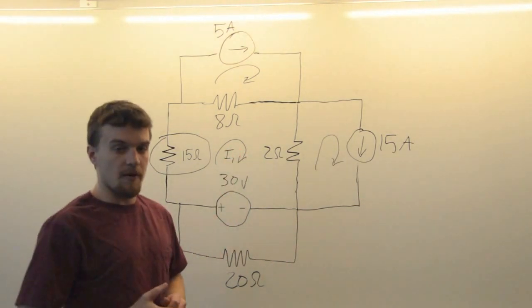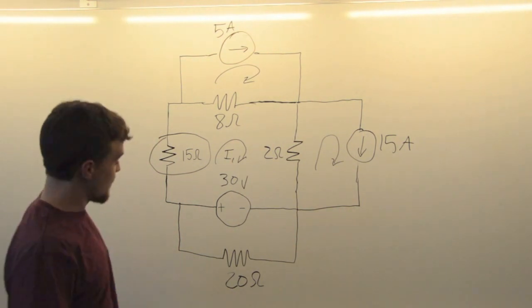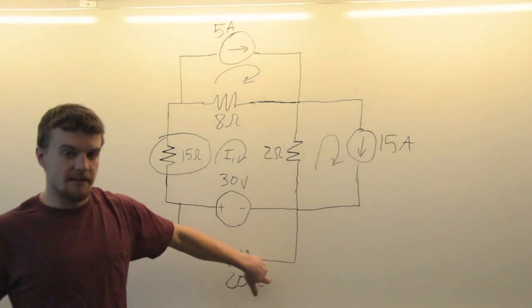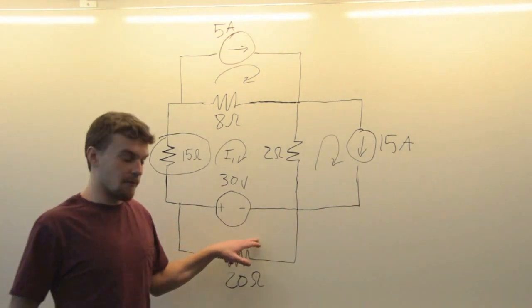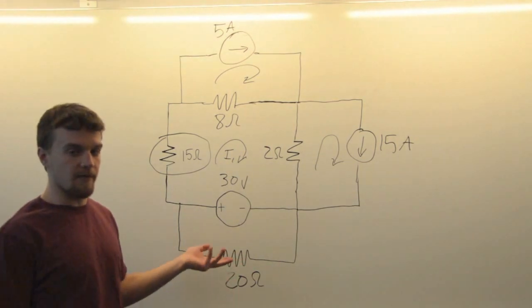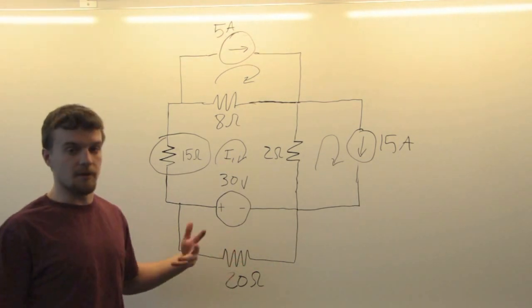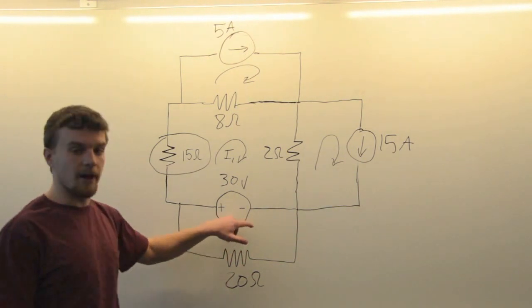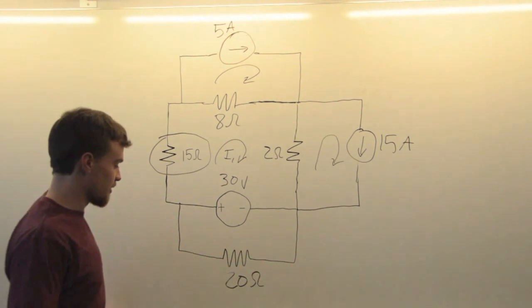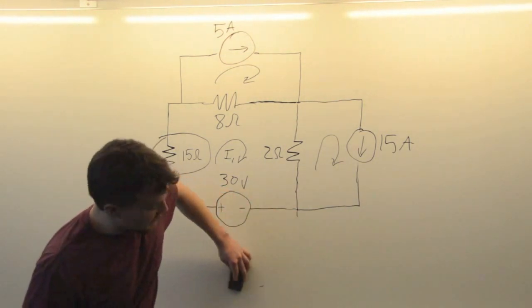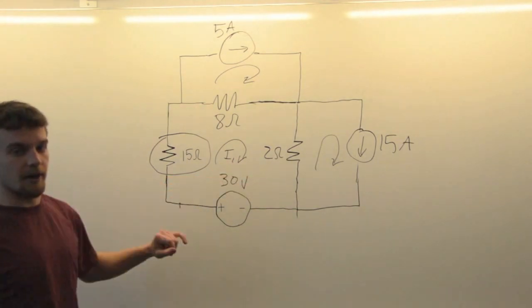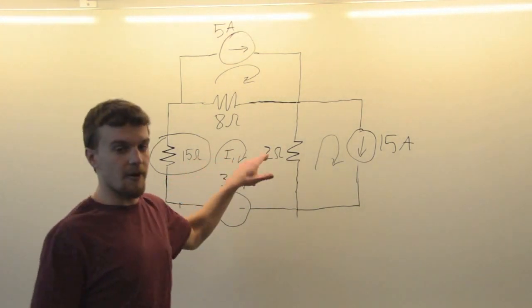One more thing we can do to simplify our job is to see that this resistor here is by itself in parallel with a voltage source. When you have that, this resistor adds nothing to the overall behavior of the circuit. It just absorbs power supplied by that source. So unless your question is specifically about this resistor, you can just pretend that it's not here. Here's our circuit and we're going to write an equation to solve for I1.